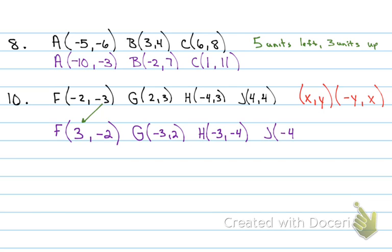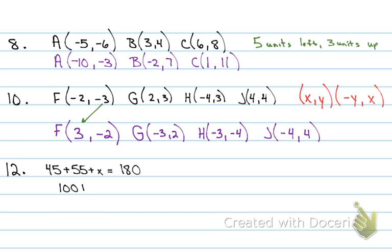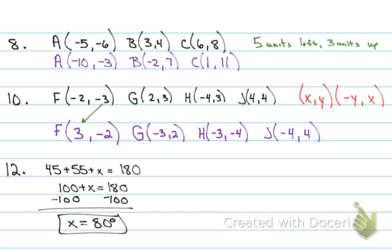Number twelve has a triangle. We cannot solve it unless we know the sum of the interior angles of a triangle is 180 degrees. The three angles add up to 180, so if you know two of them you can solve for the third. Forty-five plus 55 is 100, so 100 plus x equals 180; subtract 100, x equals 80.